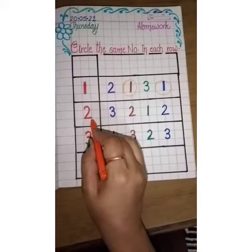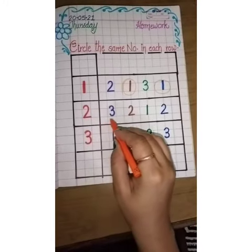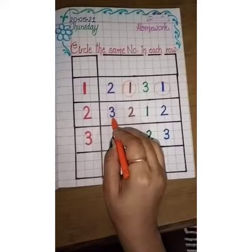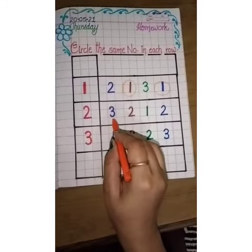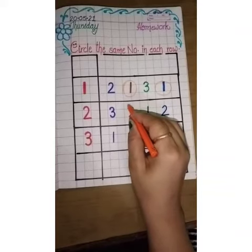Which number is this? It is two. Now we will find number two in this row. It is three. We will not circle this number. It is two. Yes, circle it.